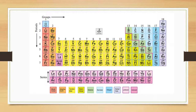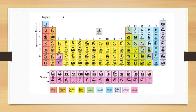Xenon, symbol Xe. Caesium, symbol Cs. Barium, symbol Ba. Lanthanum, symbol La. Cerium, symbol Ce. Praseodymium, symbol Pr. Neodymium, symbol Nd. Promethium, symbol Pm. Samarium, symbol Sm. Europium, symbol Eu. Gadolinium, symbol Gd. Terbium, symbol Tb. Dysprosium, symbol Dy. Holmium, symbol Ho. Erbium, symbol Er. Thulium, symbol Tm. Ytterbium, symbol Yb. Lutetium, symbol Lu.